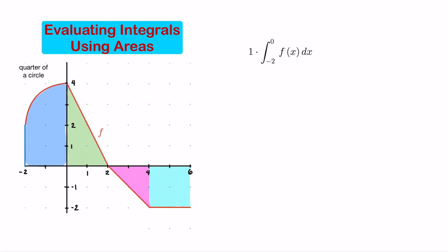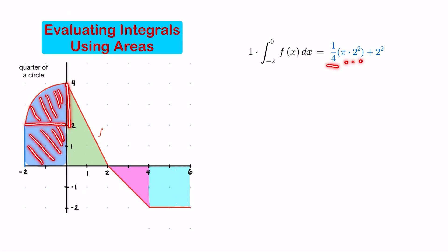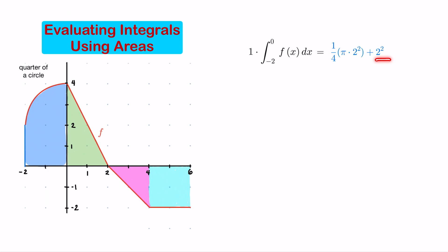The value of this definite integral equals the area of this quarter circle, which is one-fourth of π times r squared with r equal to 2, plus the area of this square of side equal to 2, which is 2 squared. This gives us π plus 4.